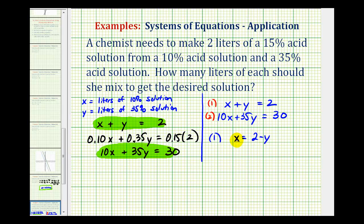Then we can perform substitution into equation 2. If x equals 2 minus y, we can replace x with 2 minus y. Equation 2 after substitution becomes 10 times (2 minus y) plus 35y equals 30. Now we have one equation with one variable, so we'll solve for y.